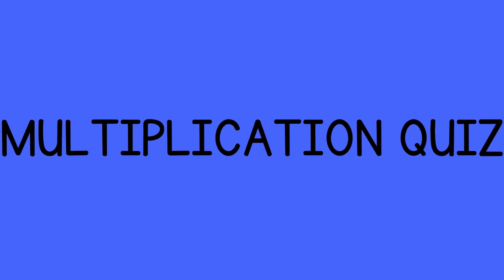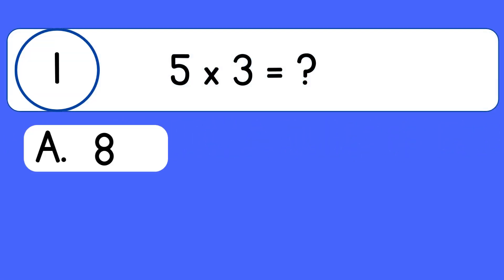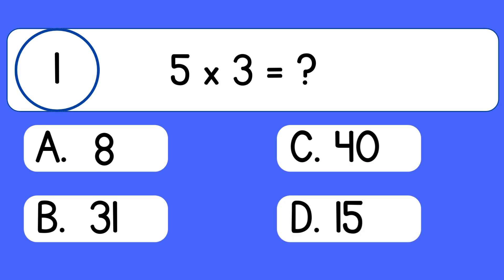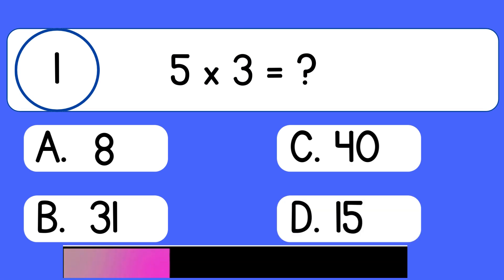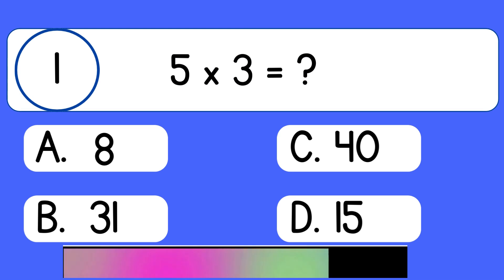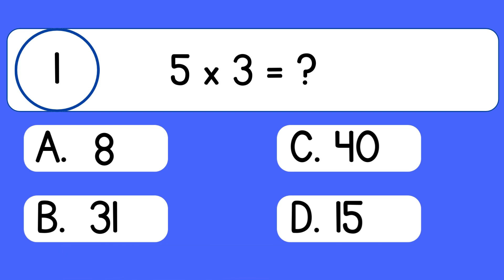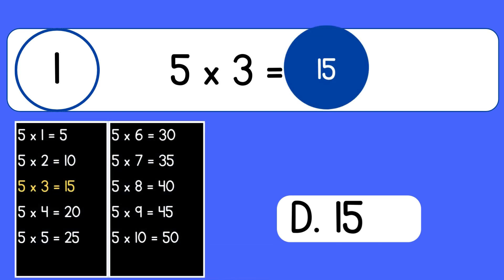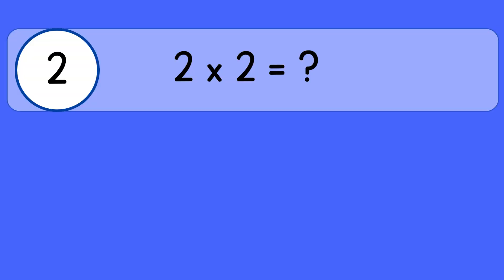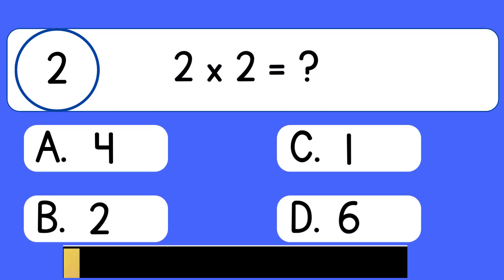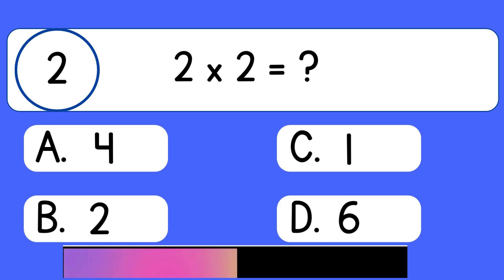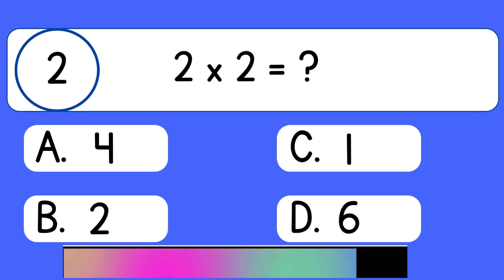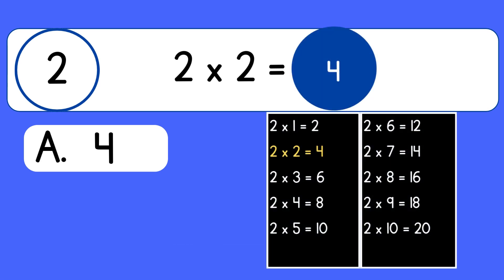Multiplication quiz. 5 times 3. 5 times 3 equals 15. 2 times 2. 2 times 2 equals 4.